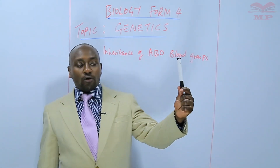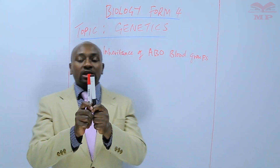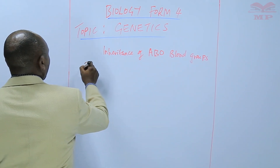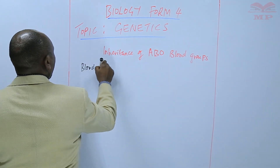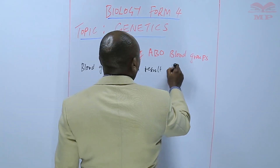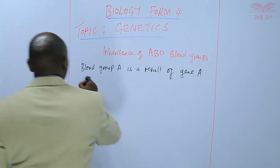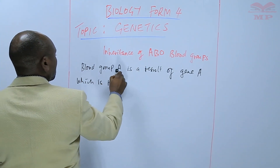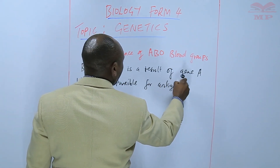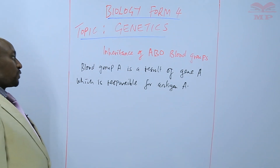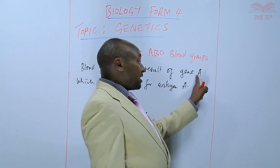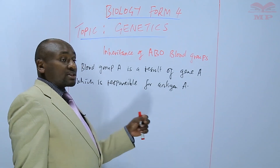For example, this is the gene for A, this is the gene for B. When they come together, we get blood group AB. Blood group A is as a result of gene A, which is responsible for antigen A. Antigens are written using capital letters. A person has blood group A because of gene A, and gene A causes the presence of antigen A.